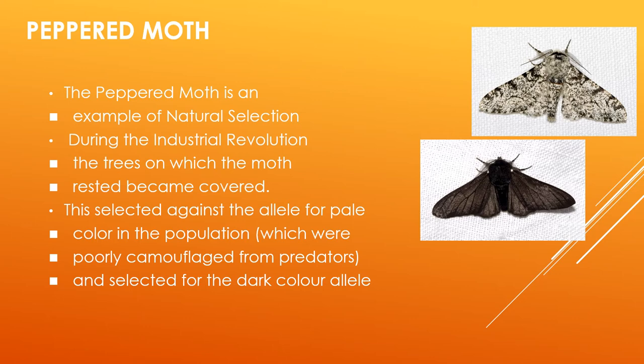Another example is the peppered moth. The peppered moth is an example of natural selection. During the industrial revolution, the trees on which the moths rested became covered with soot, which selected against the alleles for pale coloration — poorly camouflaged from predators — and selected for dark-colored alleles. This explains, similar to the green and grey wild frogs, that organisms should live where their habitat is; if not, they can be easily eaten by predators.